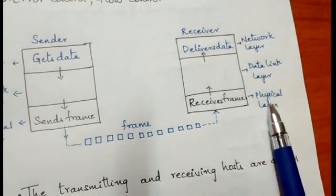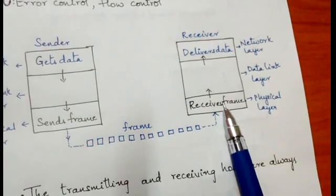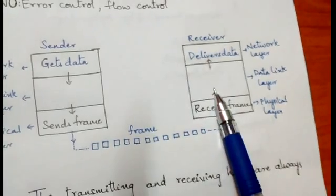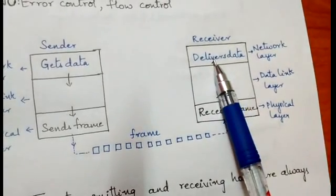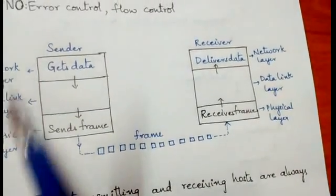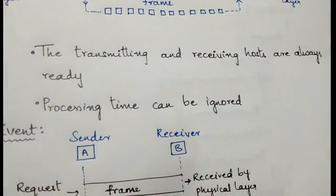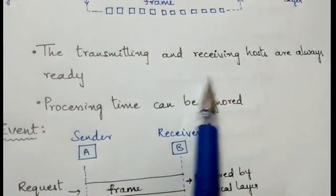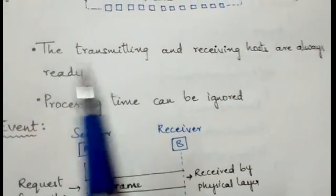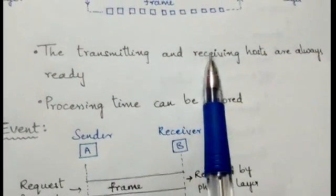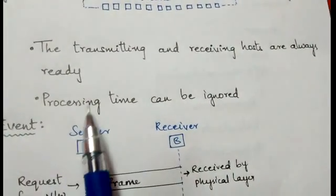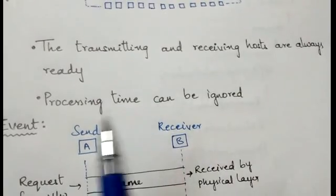The frame is sent to the receiver. The physical layer of the receiver receives the frame, which is then sent to the data link layer. The data link layer extracts the data from the frame and delivers it to the network layer of the receiver. In Simplest protocol, the transmitting and receiving hosts are always ready, and the processing time can also be ignored.